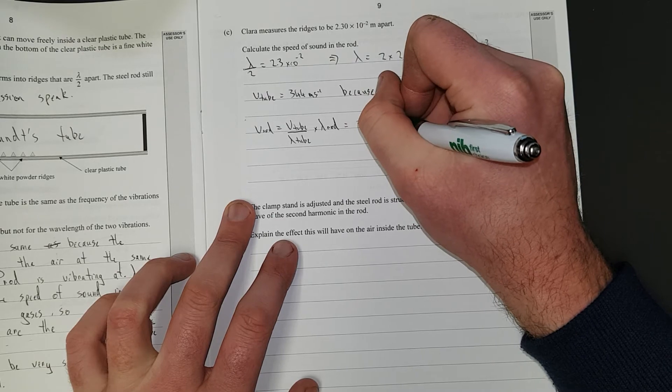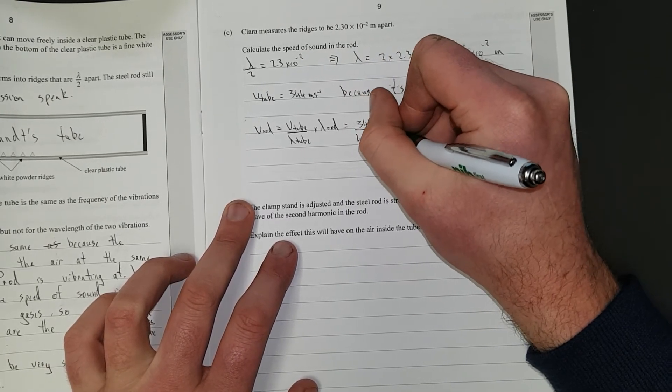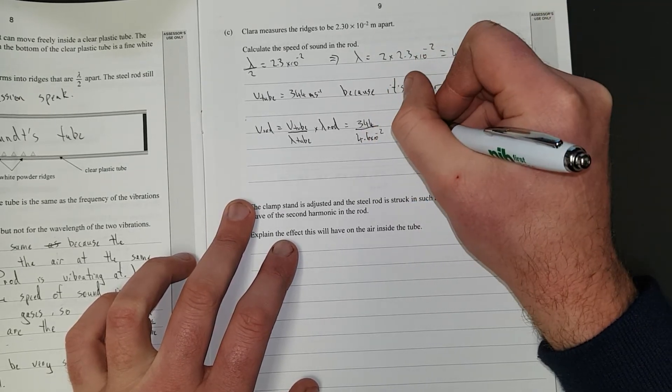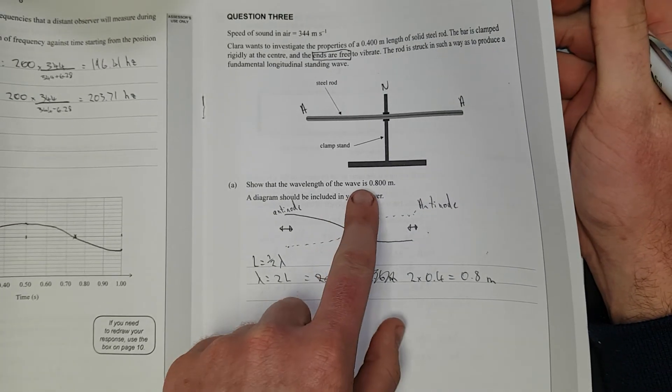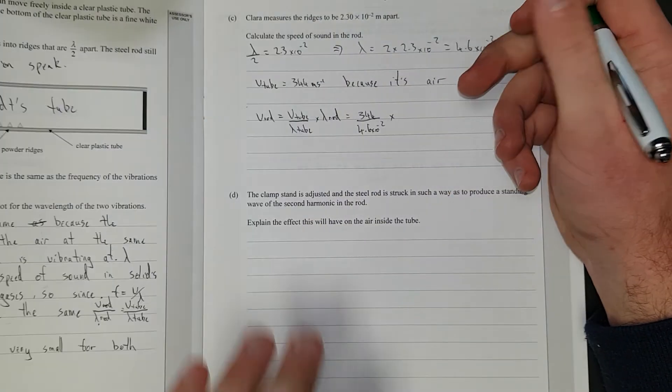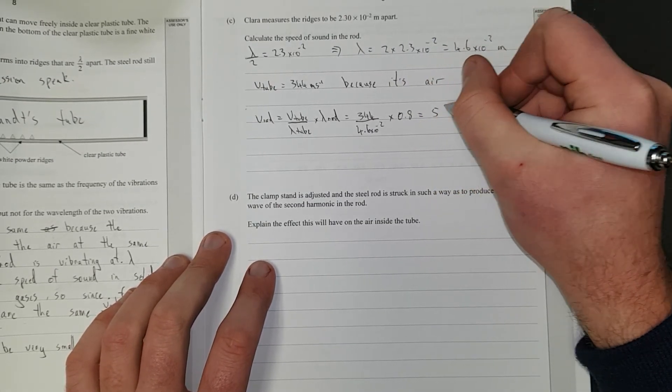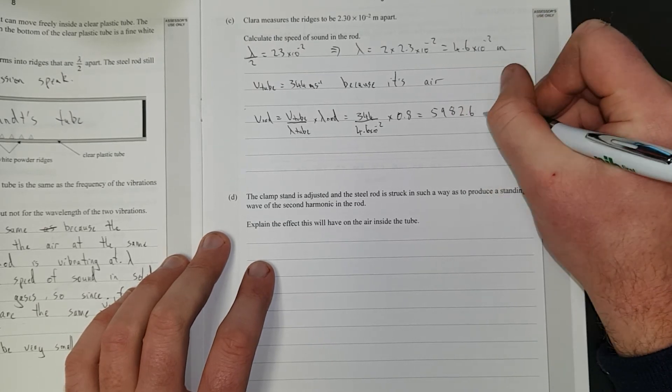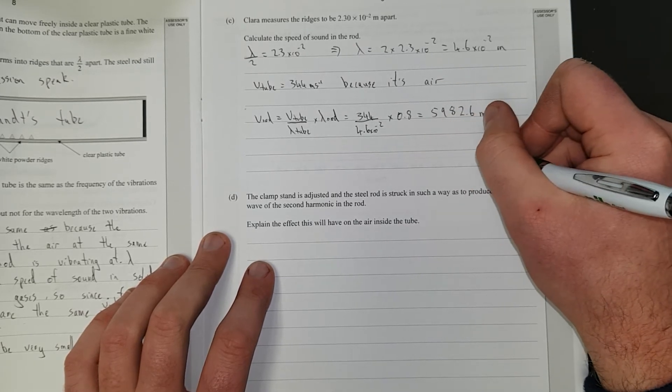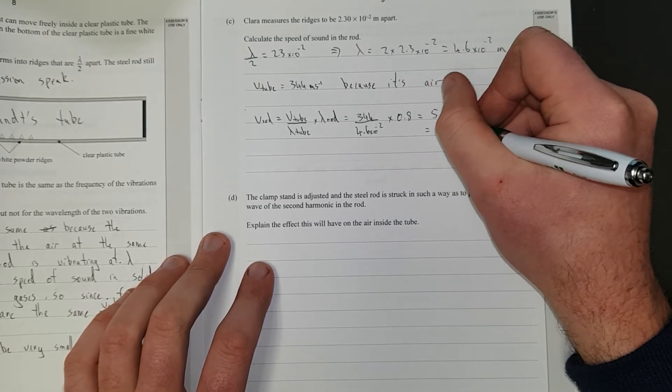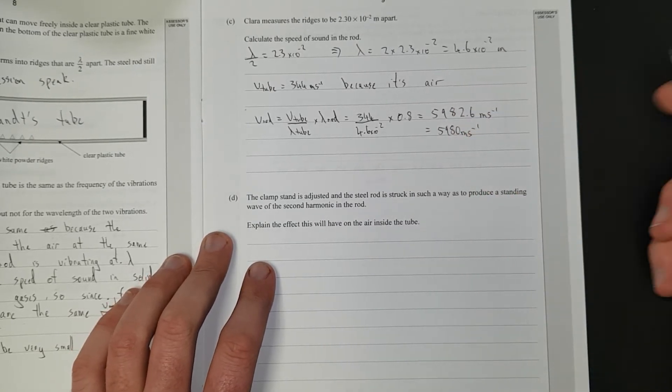So that is equal to 344 divided by the wavelength in the tube, 4.6 times 10 to the negative 2, times the wavelength in the rod over the page, still the fundamental frequency, 0.8. And that is equal to 5982.6 meters per second. And then you round, so it's 5980 meters per second, 3 significant figures.